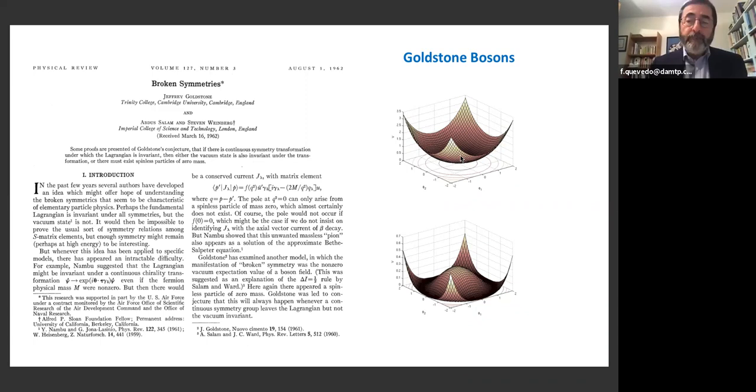In this other option, the potential looks like this. Now the symmetric point is a maximum, not a minimum. The minimum is actually not symmetric because you can move around in the circle, so there are many minima. The curvature in this direction is non-zero, so there's a massive particle. But in this other direction, it is flat, so the corresponding particle is massless, and that's what is called the Goldstone boson.